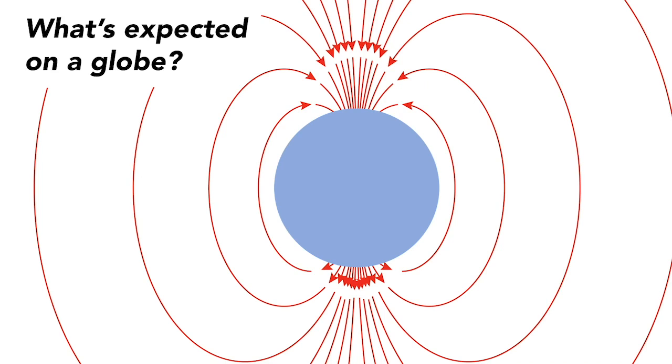What about on a globe? Given the accepted understanding of the earth and its magnetic pole, what would we expect to see from a compass? Well, given how the globe has two magnetic poles, the lines of the magnetic field go straight down at the north pole and straight up at the south pole, like this, forming this pattern.